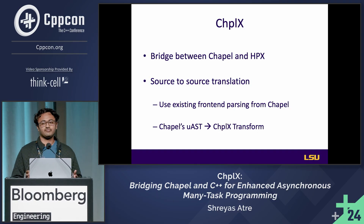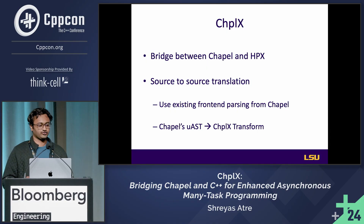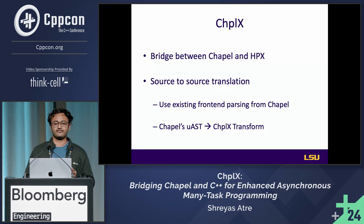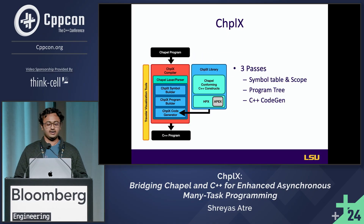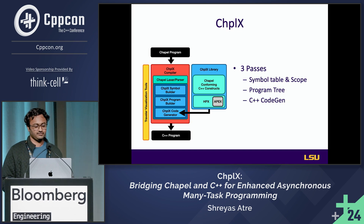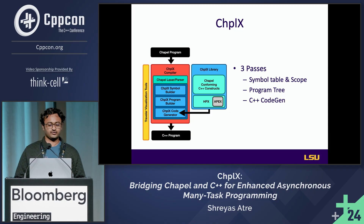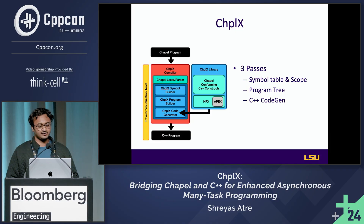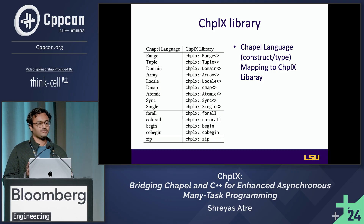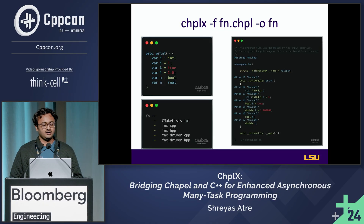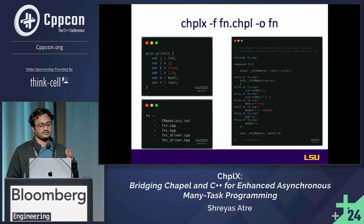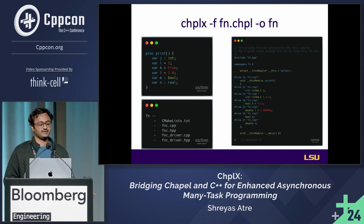So why not just bridge the gap between Chapel and HPX? We developed a source-to-source translator using the existing framework from Chapel's front end, and we transformed Chapel's micro AST. We do this in three passes: first we construct the simple table scoping for C++, then generate the program tree and C++ in the block diagram. There's a ChapelX library which maps most of Chapel's constraints and data types. When you pass the compiler a Chapel function, it generates the corresponding C++ module with all the C++ bindings and driver code.